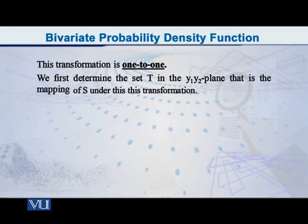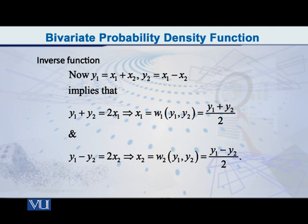The important point to note is that this transformation is one-to-one. Now let us find the inverse functions. We have y1 = x1 + x2 and y2 = x1 - x2. If we add both equations, the x2 terms cancel and we get y1 + y2 = 2x1, so x1 = (y1 + y2) / 2.